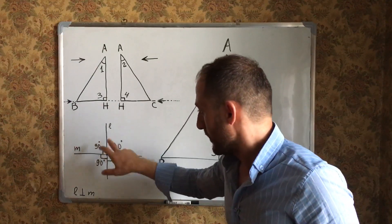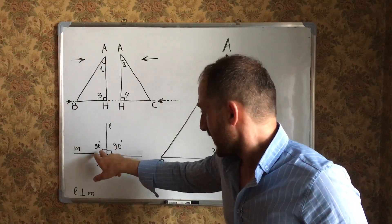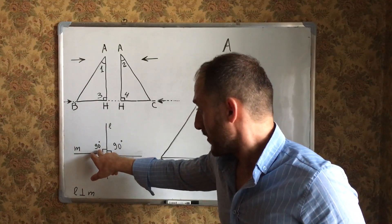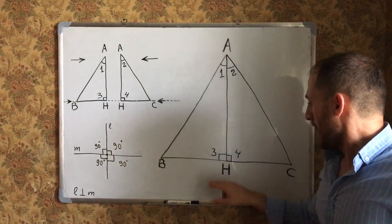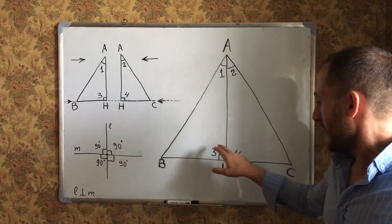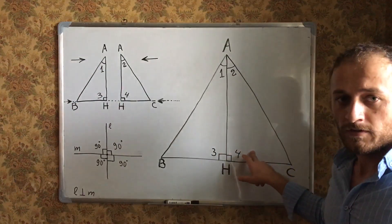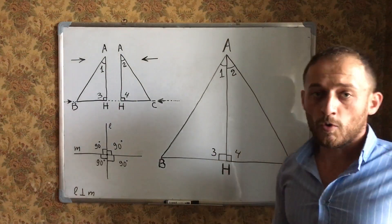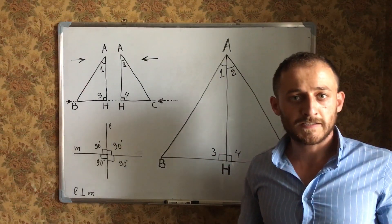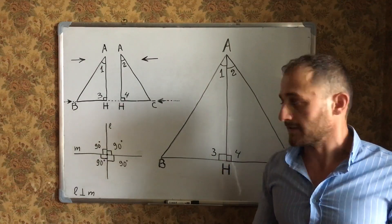Look, N perpendicular to L forms these four right angles. Therefore, angle 3 and angle 4 are congruent, because all right angles are congruent angles.